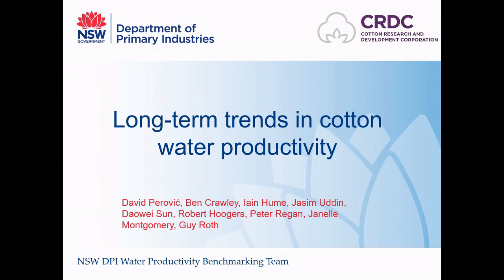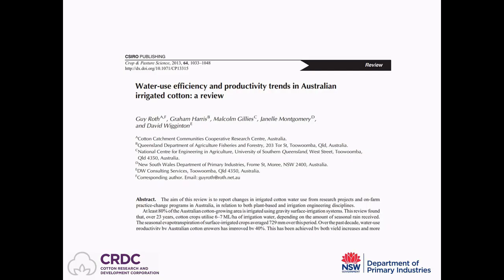The objective of this work is to update the long-term trends in cotton water productivity across the Australian cotton industry. These long-term trends were last updated in 2013, when it was established that the cotton industry had made a 40% improvement in water productivity over the then previous ten years. We revisited that data from 2013 and added five years of new data to update and reassess those long-term trends across the whole Australian industry.